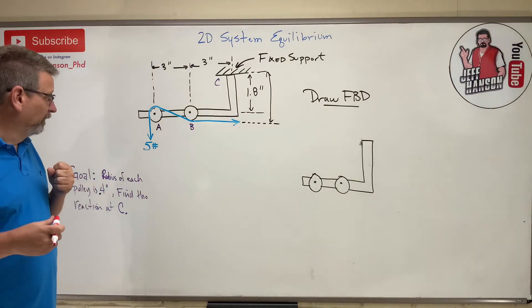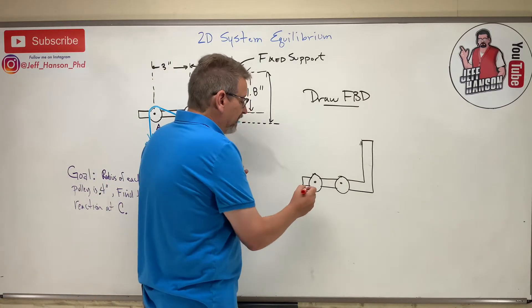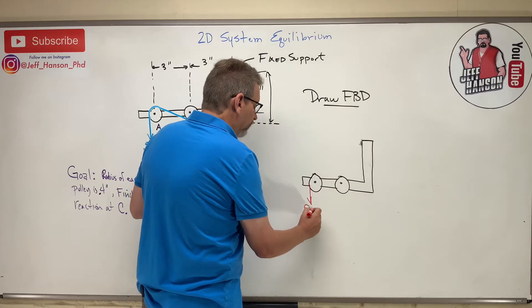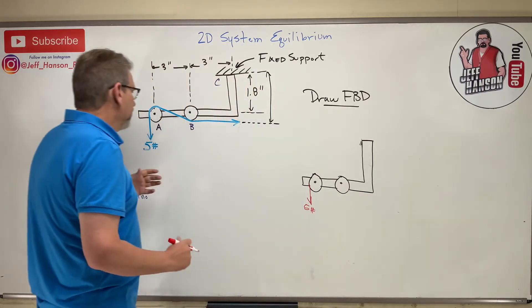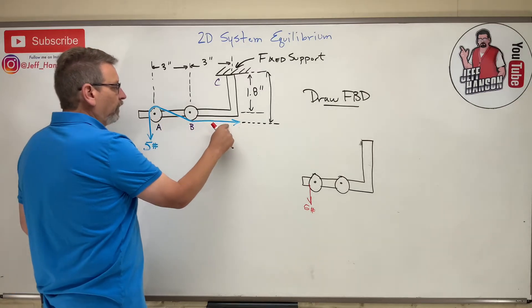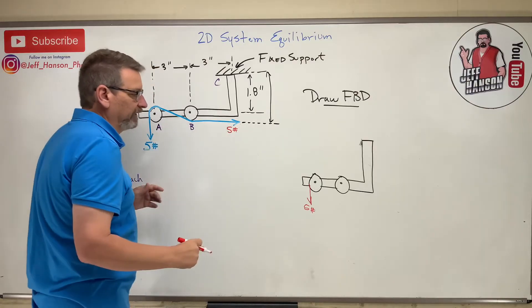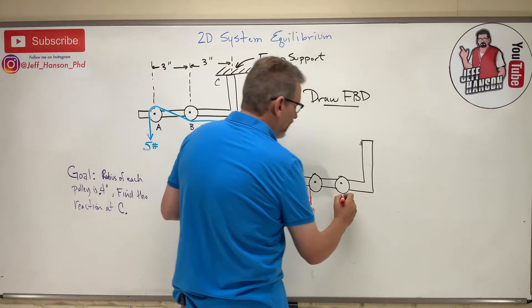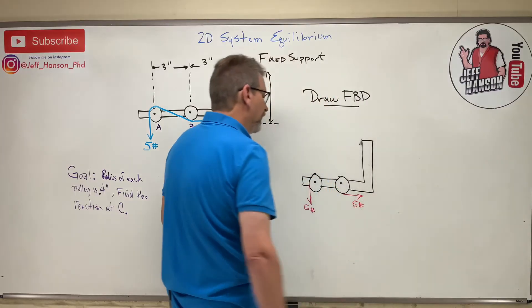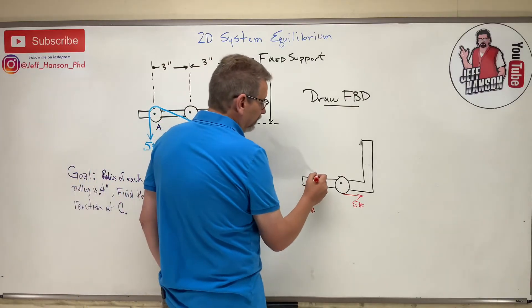Let's put on the external loads first. Now this is a little bit tricky. Over here I have a rope and it's 5 pounds. If I got a rope going over a pulley, what is the rope tension over here? It's also 5 pounds, isn't it? It hasn't changed. So what do I have over here? Five more pounds.